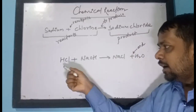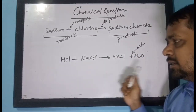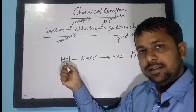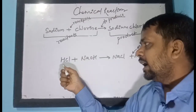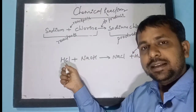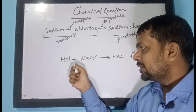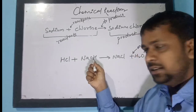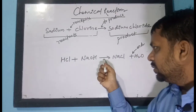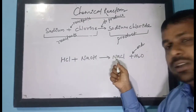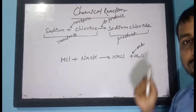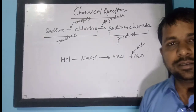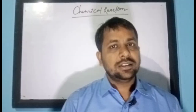How do we read this reaction? You can say: HCl, or hydrochloric acid, reacts with NaOH, or sodium hydroxide, to produce sodium chloride and water. I hope you understood. Thank you very much.